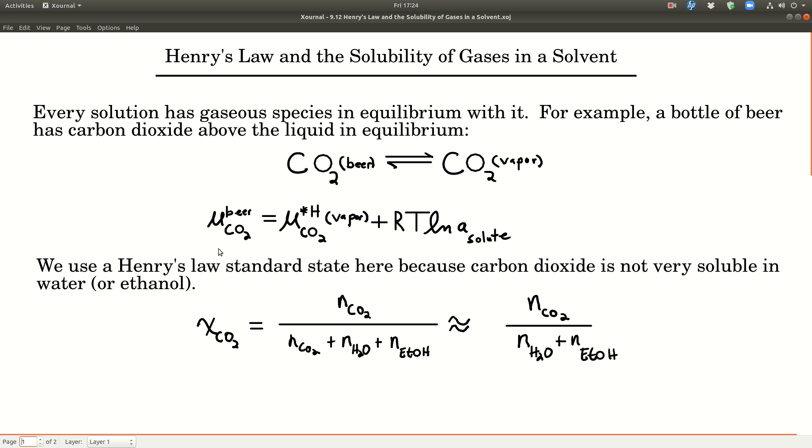The chemical potential for the carbon dioxide in the beer would be equal to the chemical potential of the pure carbon dioxide in the vapor phase. We're going to use Henry's Law standard state here because carbon dioxide is not very soluble in either water or ethanol, which is basically what beer is, plus RT ln of the activity of the solute, which is carbon dioxide.